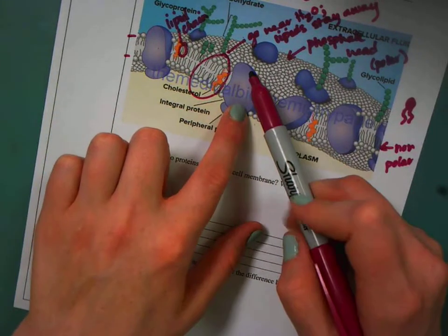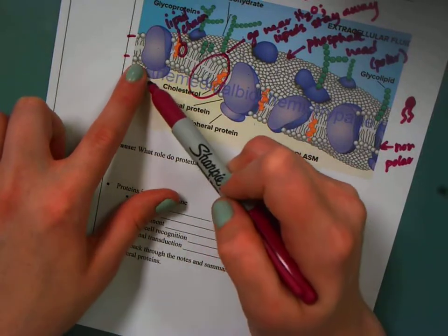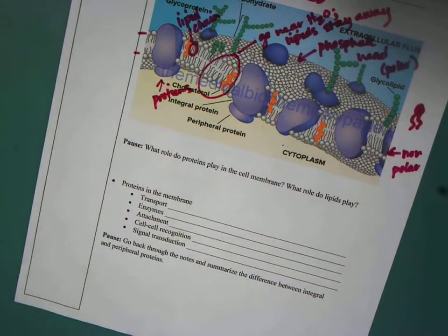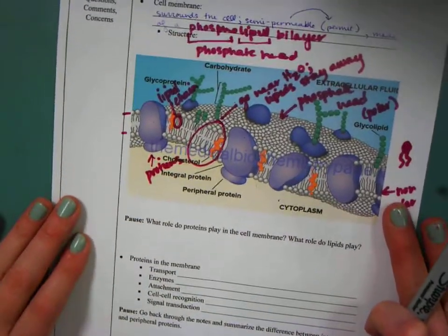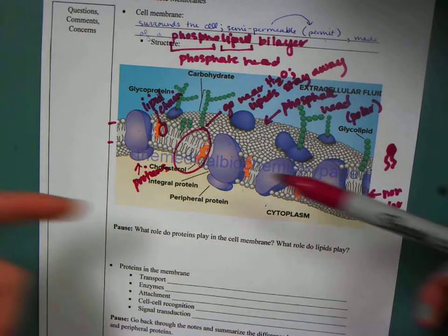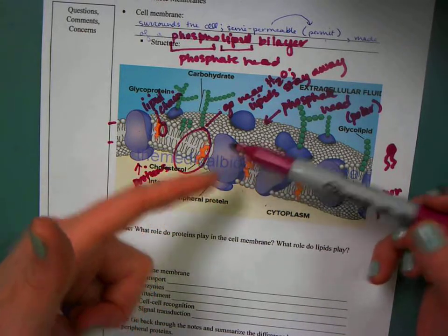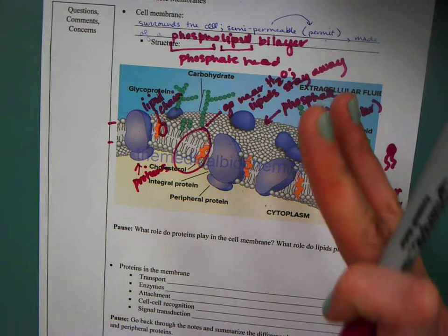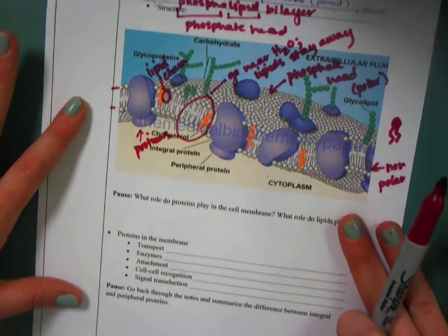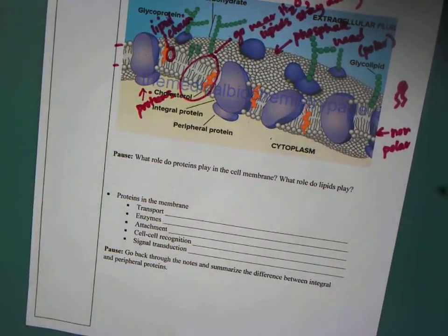And then if you look at this, these are my proteins. So when we're thinking about the idea of being semipermeable, a big part of that is actually this idea that we have proteins in the cell, in the cell membrane that are helping with transportation. Remember, that's one of the roles of proteins, is that they help with transportation. So we're going to go ahead and pause the video and answer this question for me.